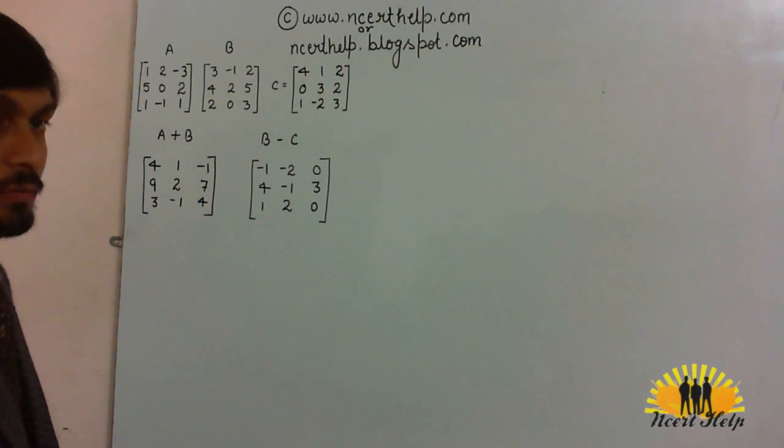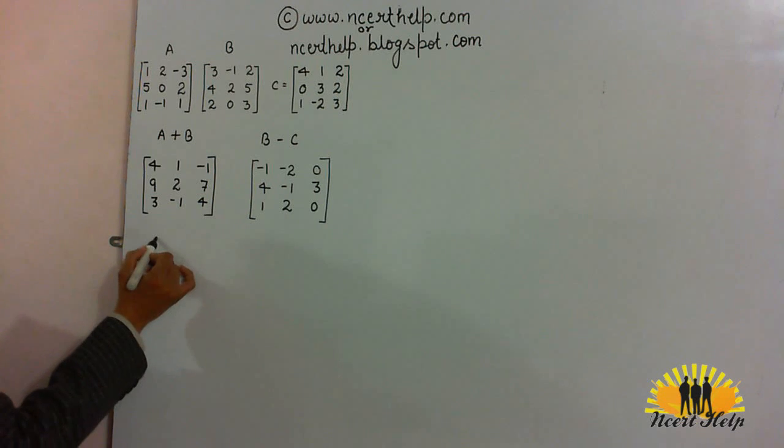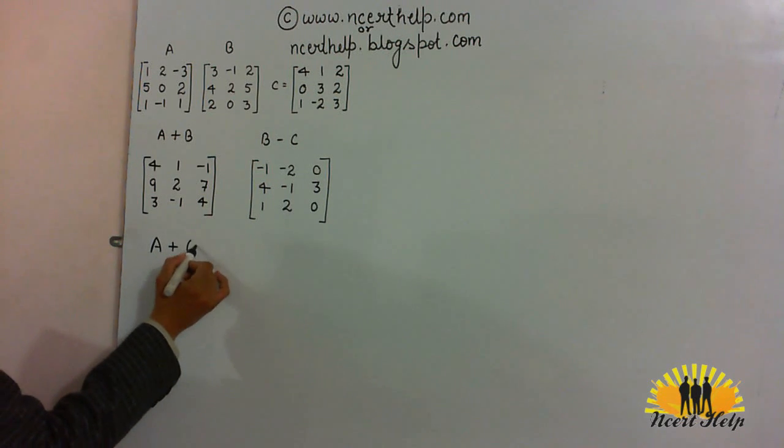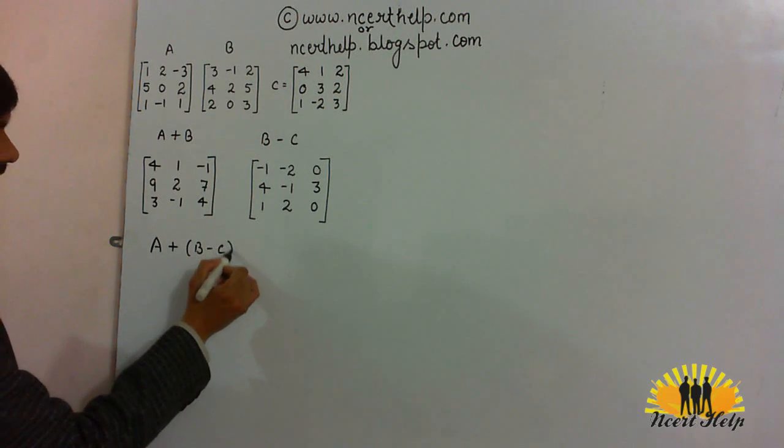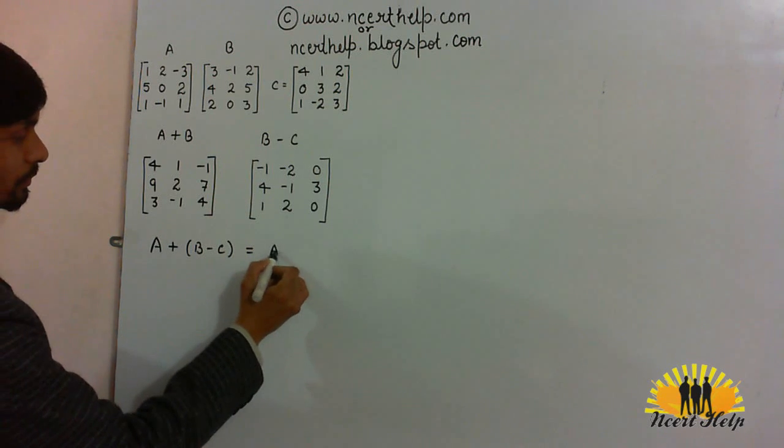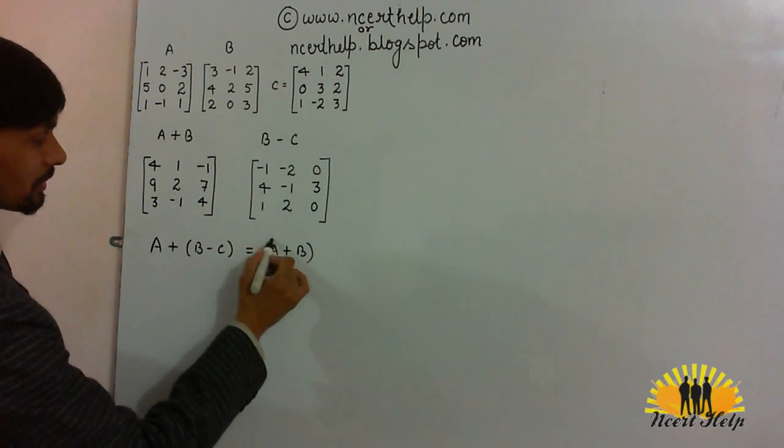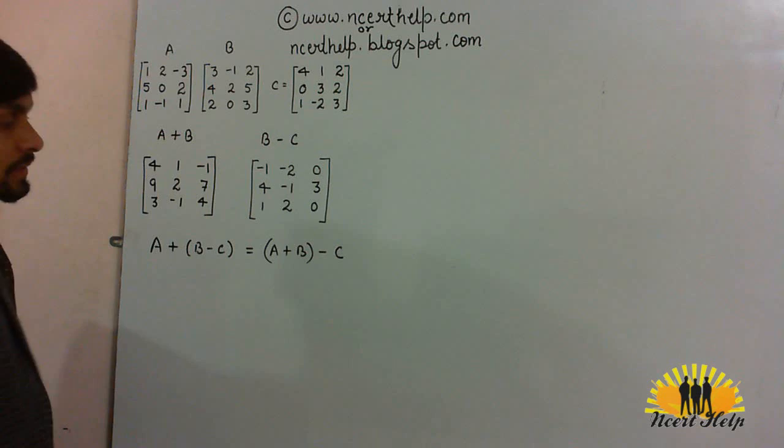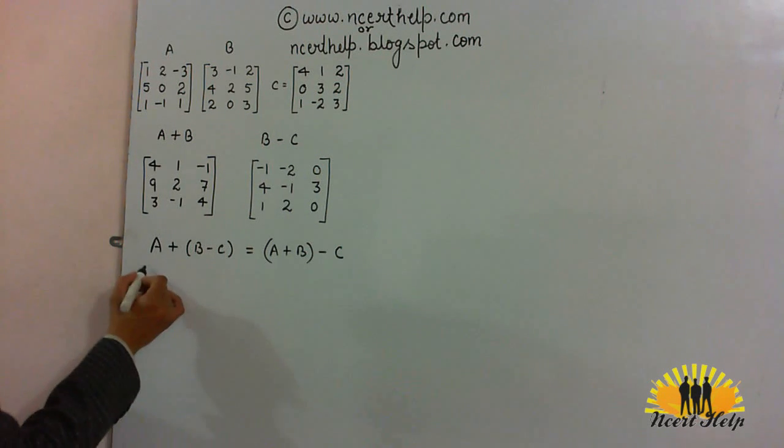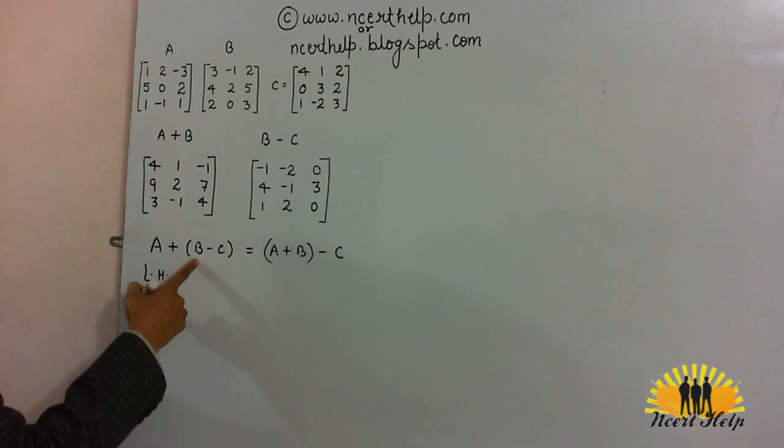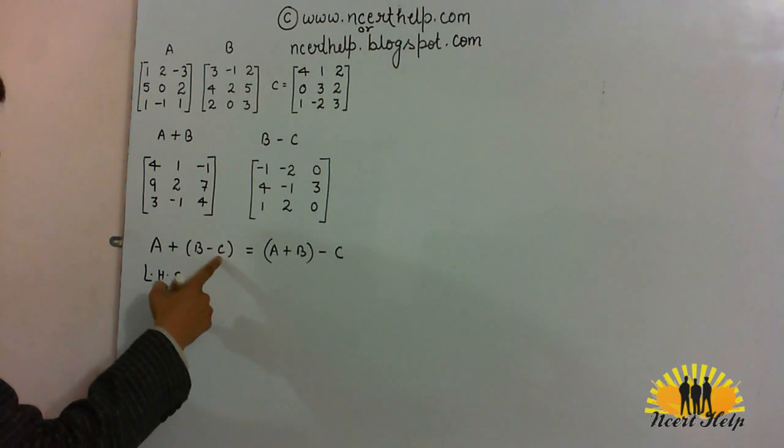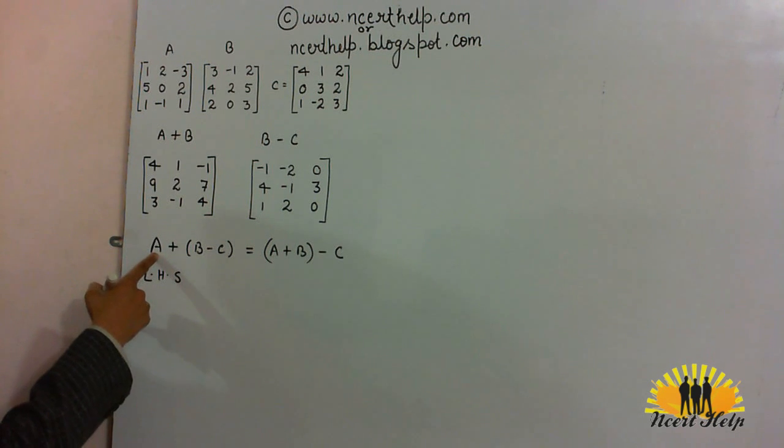Now, we have to verify A plus B minus C is equal to A plus B minus C. First, take left hand side of this question. A plus B minus C. The bracket indicates, first you have to do B minus C. Then, you have to add matrix A.